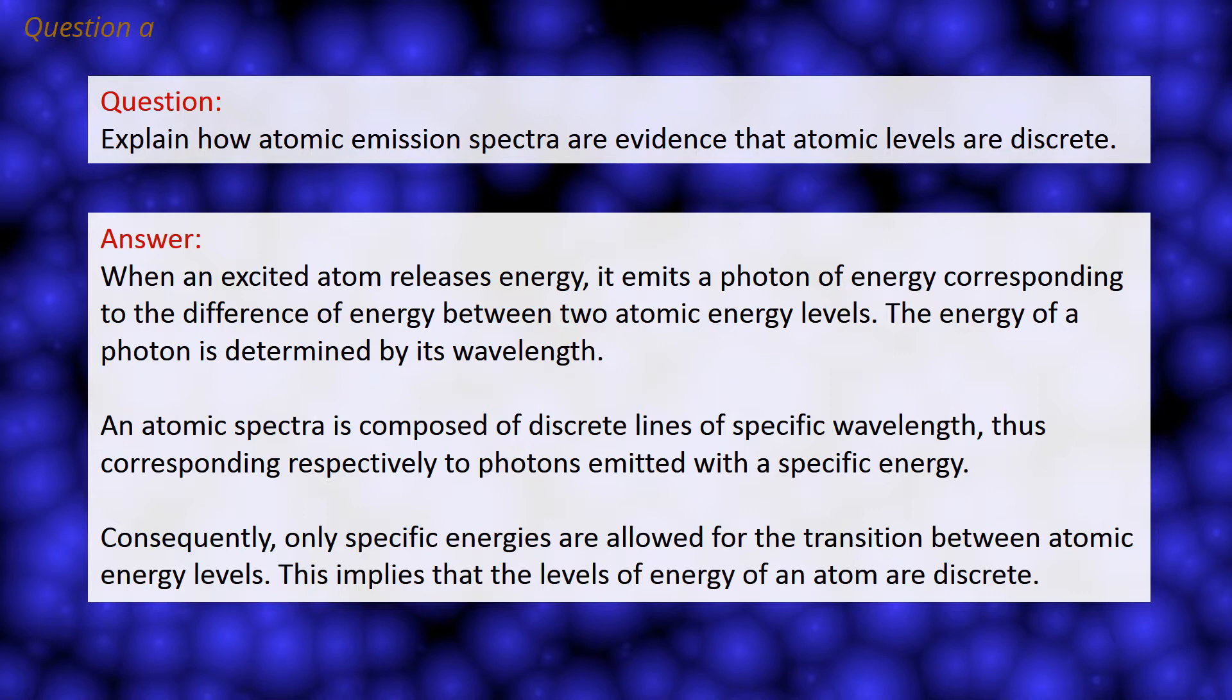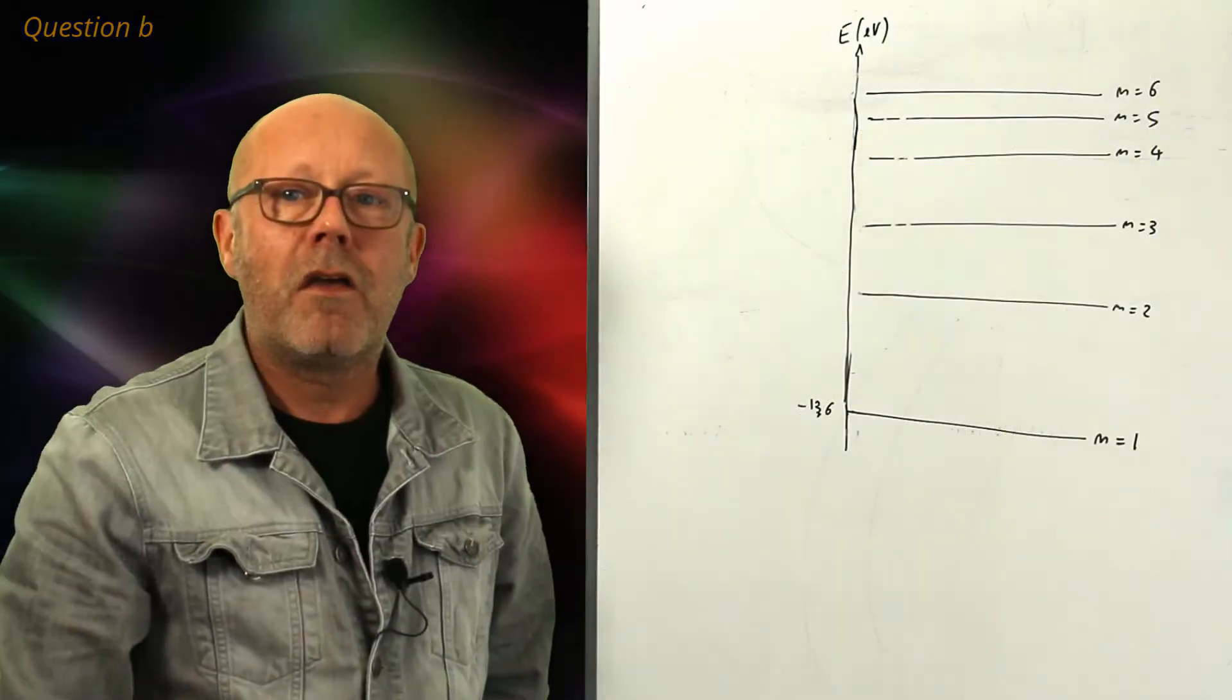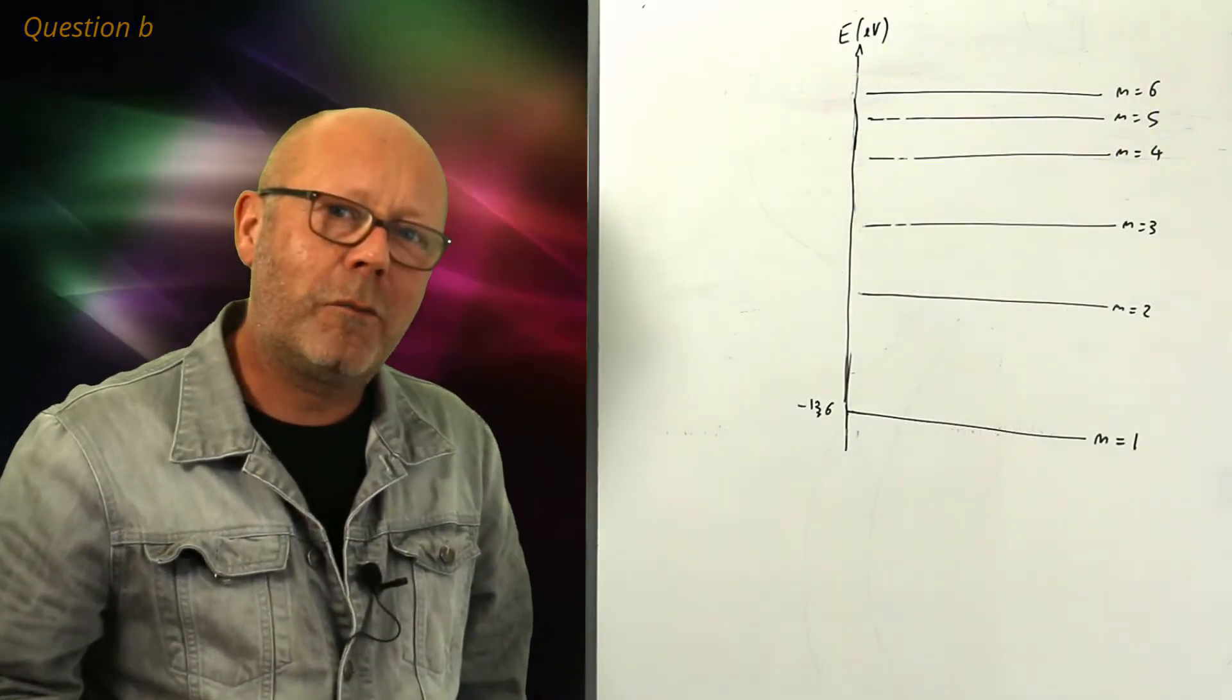Consequently, only specific energies are allowed for the transition between atomic energy levels. This implies that the levels of energy of an atom are discrete.